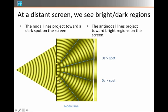The antinodal lines, the regions where there's large wave amplitudes, also project outwards, and these reach the screen at certain locations. Those we'll call bright spots.